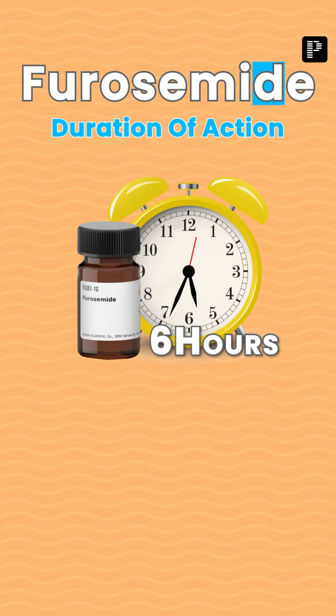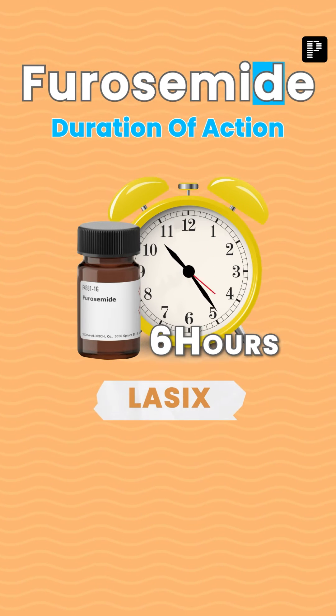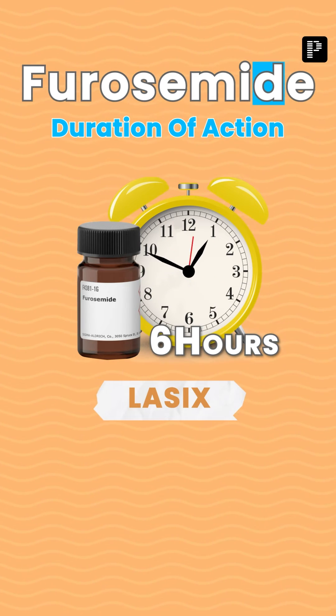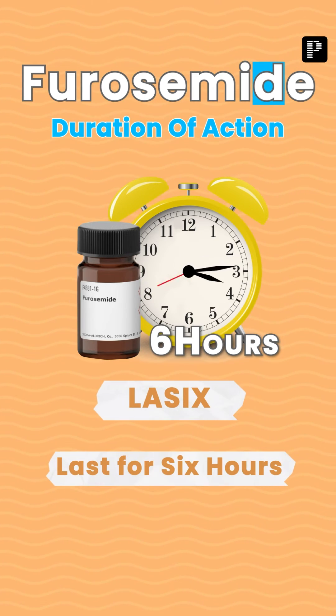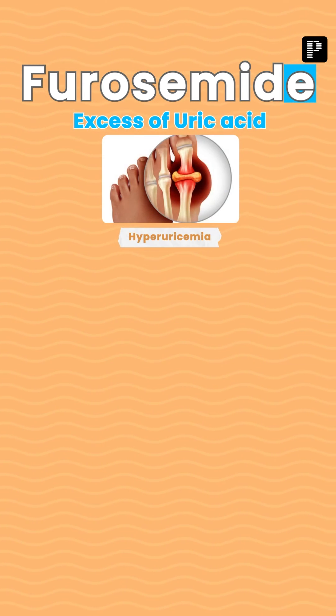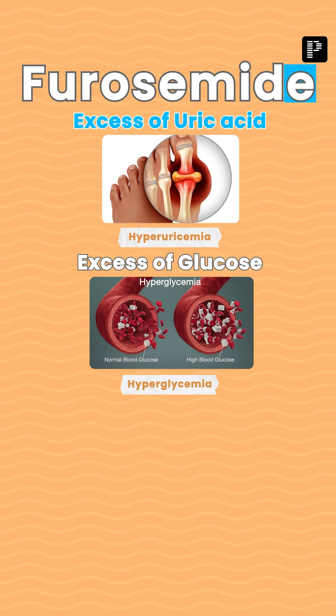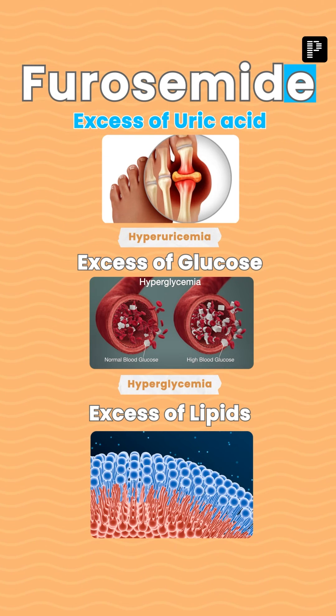D stands for duration of action — the duration of action of furosemide is six hours. That's why the name 'lasts six' — it lasts for six hours. The second E: it can cause excess uric acid, leading to hyperuricemia, and excess glucose, leading to hyperglycemia.